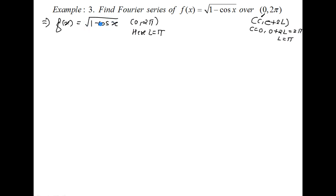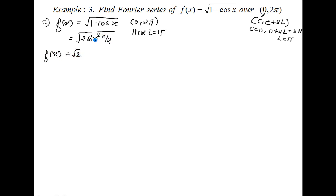For this function, we have to simplify (1 - cos x) using the half-angle formula. 1 - cos x can be written as 2 sin²(x/2). So our function becomes √2 · sin(x/2). Taking √2 outside and simplifying sin²(x/2), we get sin(x/2). So that is actually our function.